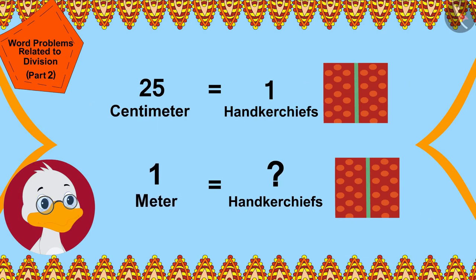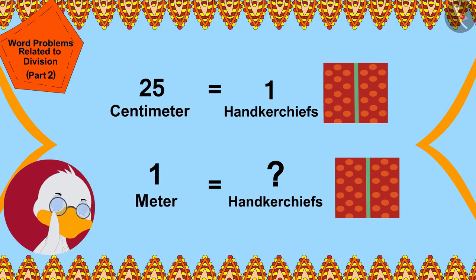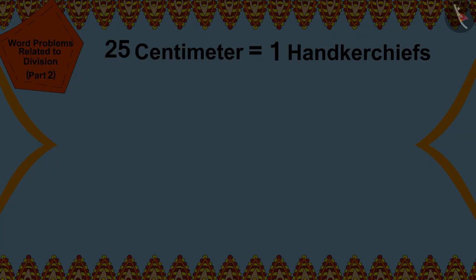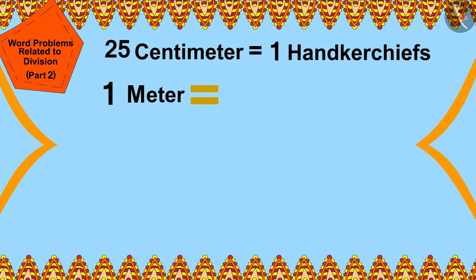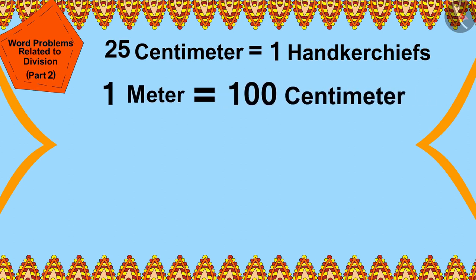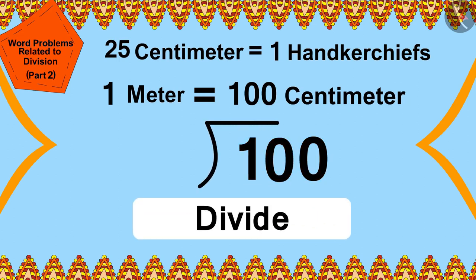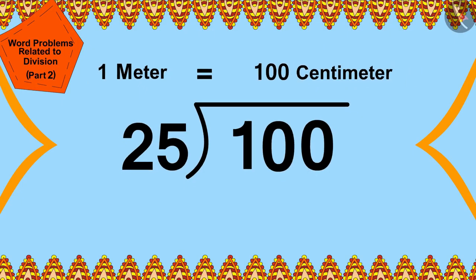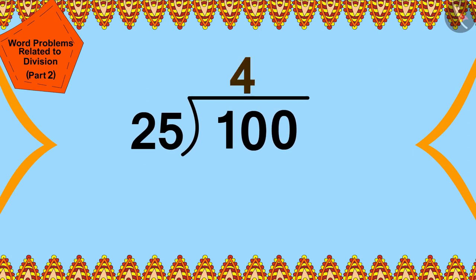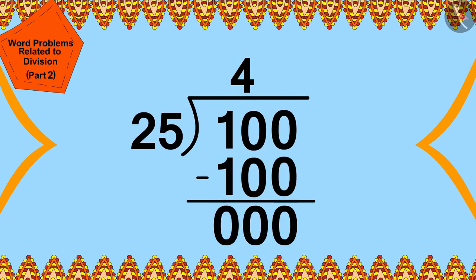With this one meter long cloth, Cha Cha wondered: one meter is equal to 100 centimeters. I can find this answer by dividing 100 centimeters by 25. In this way, Cha Cha divided 100 by 25.